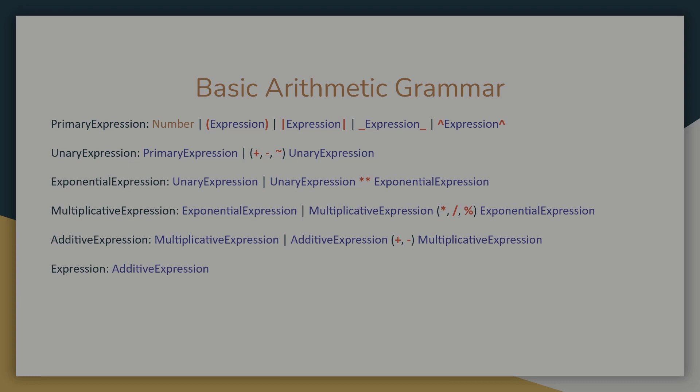Notice that all of these definitions are recursive. This is because expressions are naturally recursive. Consider negative negative ten. That should be a valid expression, so our unary expression has to be defined in terms of itself. If there are no operators, it is simply a primary expression. Regardless of how many unary operators there are, this grammar will parse any unary expression.